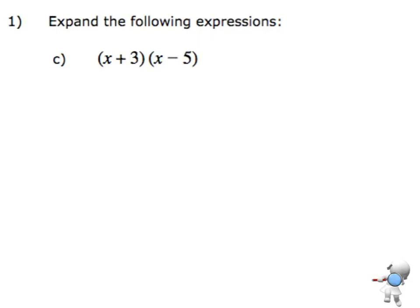I'm going to take the first element in the first set and multiply that by each element inside the next bracket. So x times x, then x times the other element, x times minus 5, which gives me minus 5 times x.